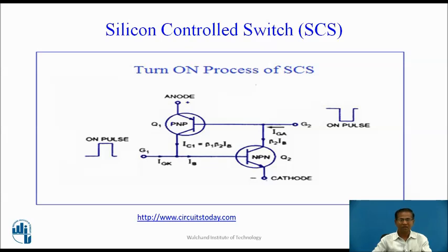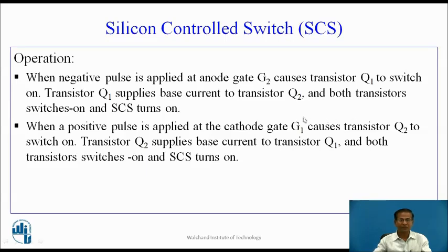Let us see how to turn on SCS. To turn on SCS, apply a positive trigger pulse to the cathode gate or a negative trigger pulse to the anode gate. When a negative pulse is applied at anode gate G2, it causes Q1 to switch on; transistor Q1 then supplies base current to transistor Q2, and both transistors switch on and SCS turns on. When a positive pulse is applied to cathode gate G1, it causes transistor Q2 to switch on; transistor Q2 supplies base current to transistor Q1, and both transistors switch on and SCS turns on.